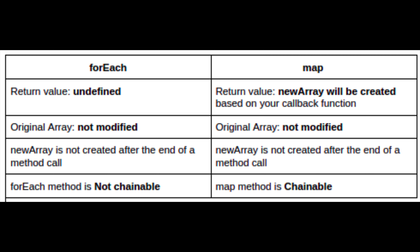For the map method: the return value is a new array created based on your callback function, the original array is not modified, a new array is created after the method call, and the map method is chainable.